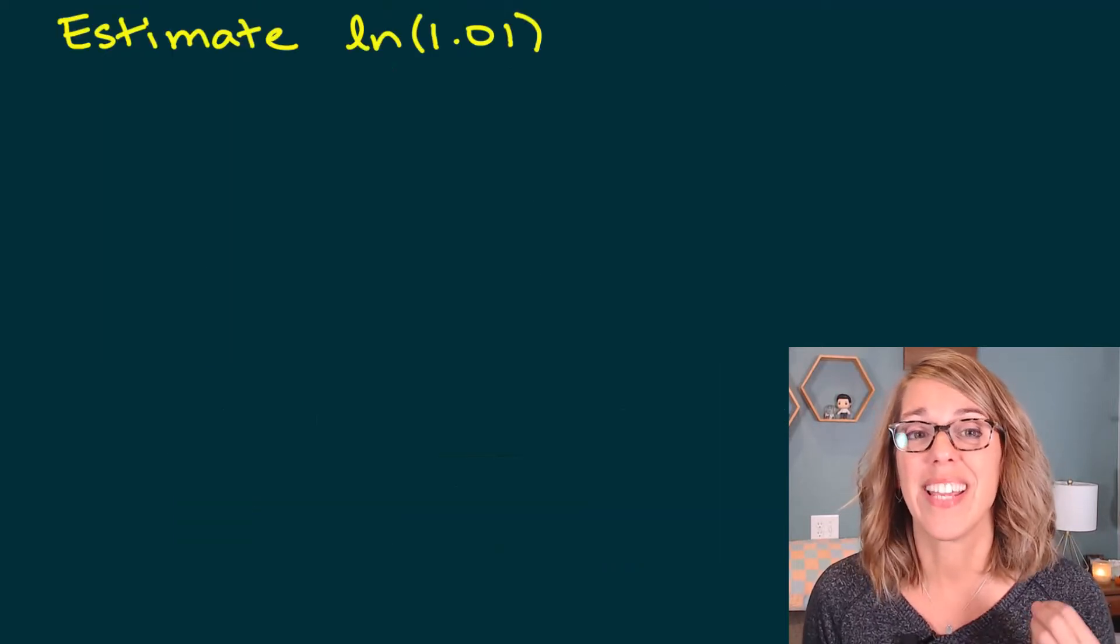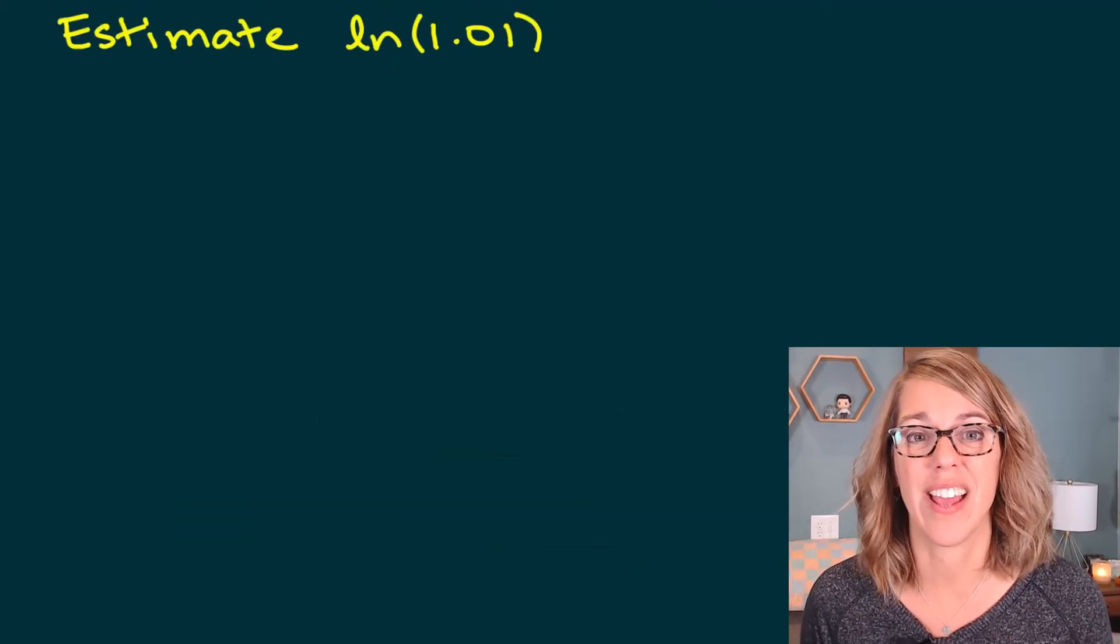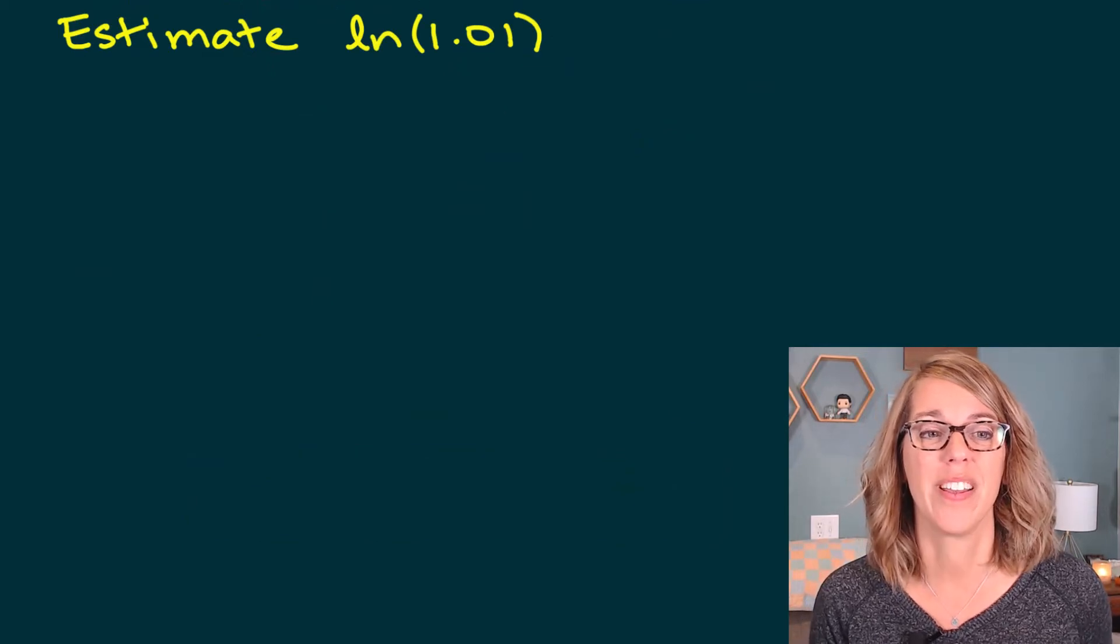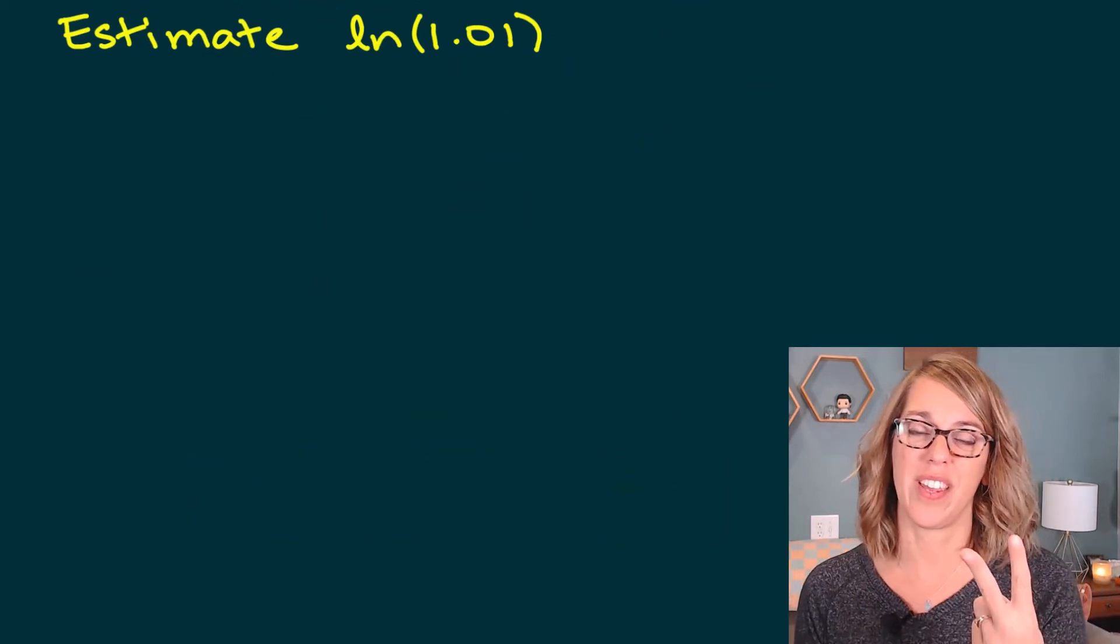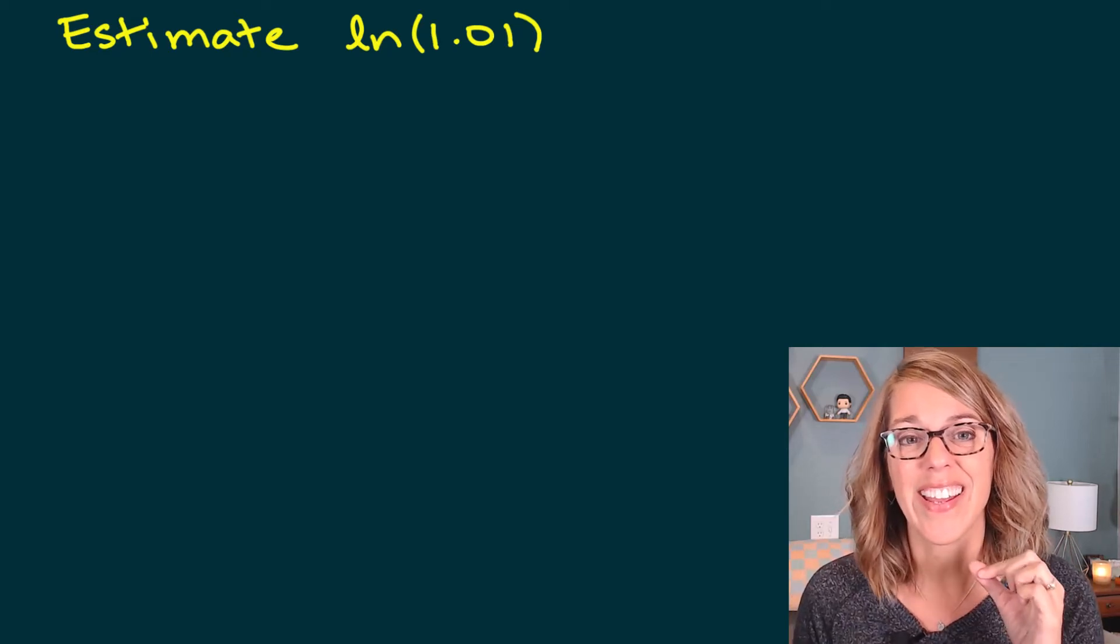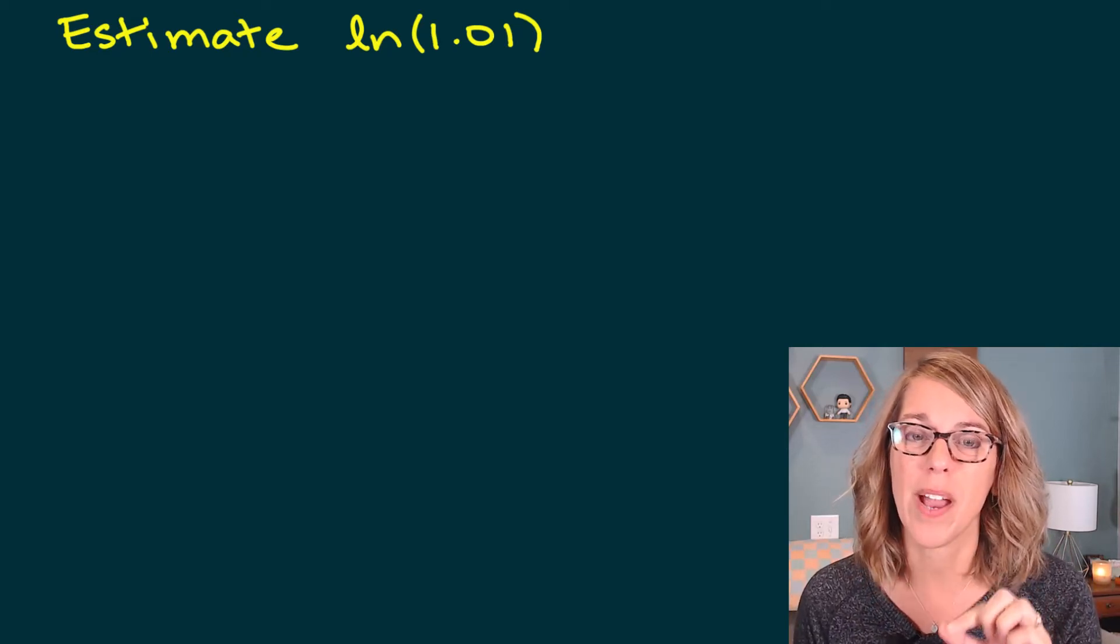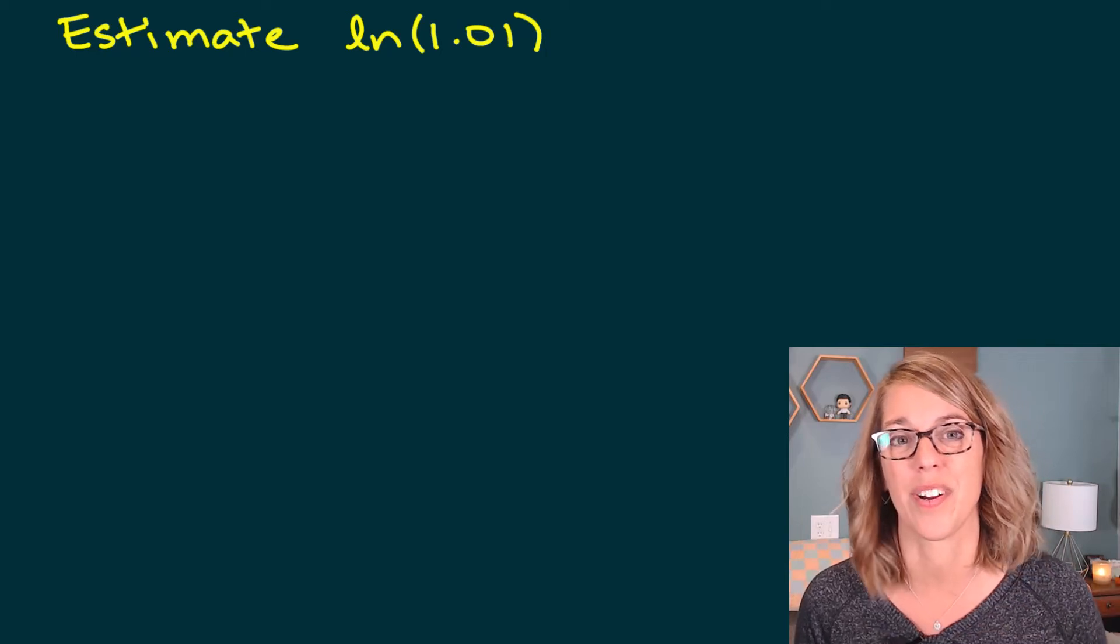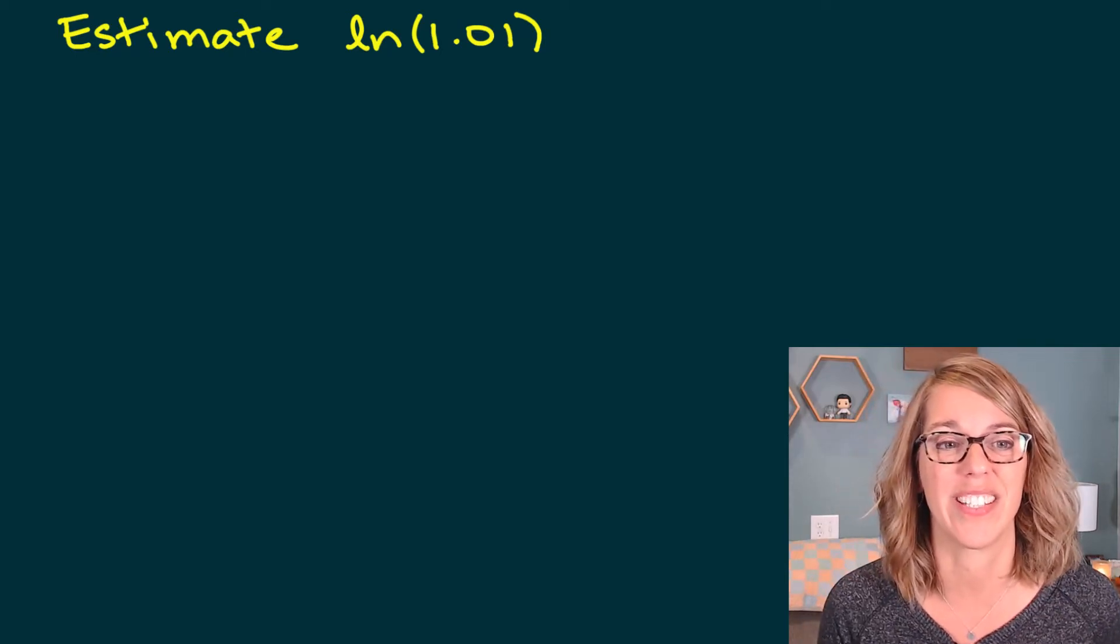Next, we want to estimate again with the linear approximation, the natural log of 1.01. So I need to identify two things. I need to identify the function that I'm using, that's the natural log, and I need to identify the nearby point, the nice number that I'm going to use for a, for the point of tangency.